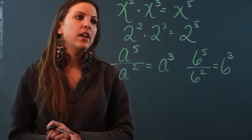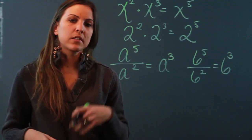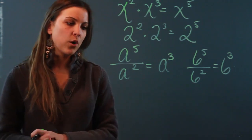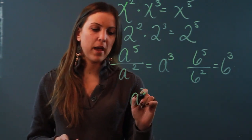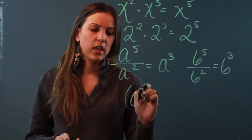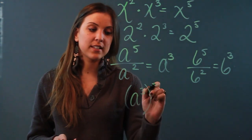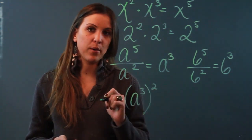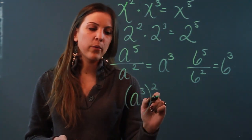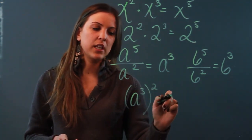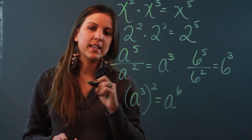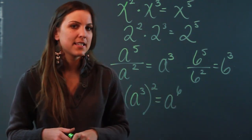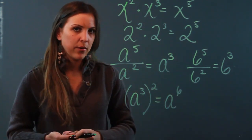Then you have the power-to-the-power law. So if I had a to the third power raised to the second power, what I do is actually multiply my exponents — I get a to the sixth power.